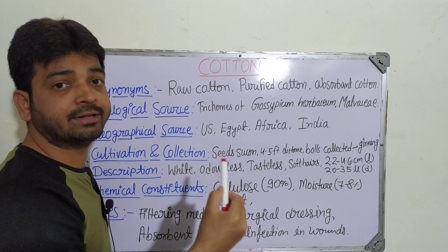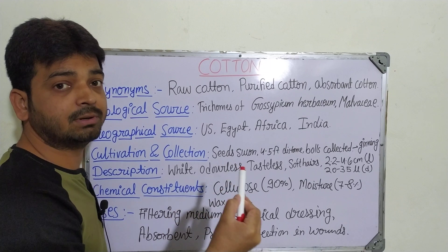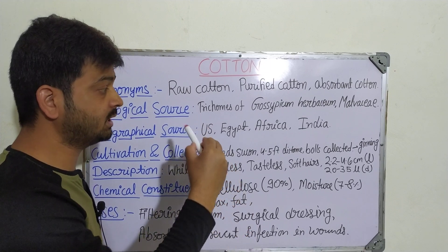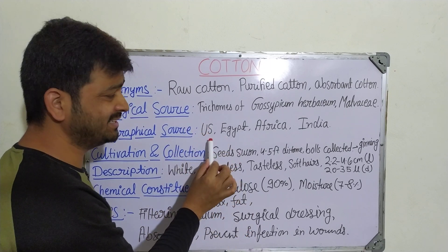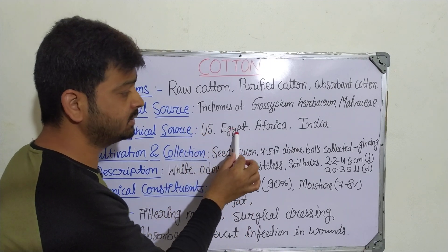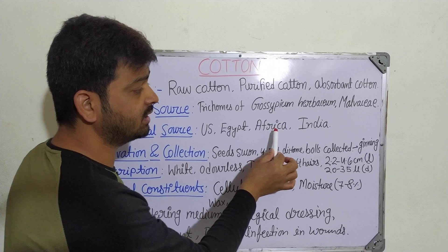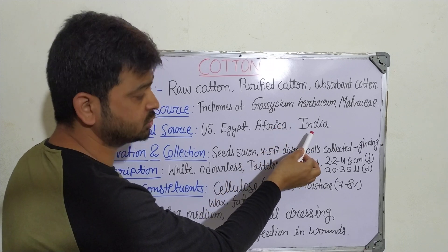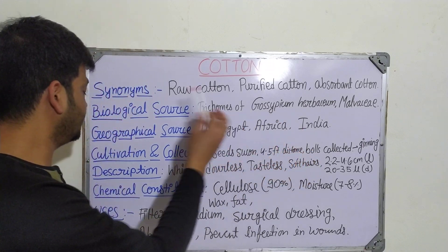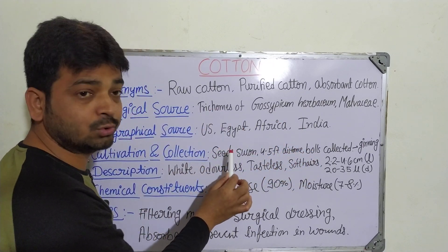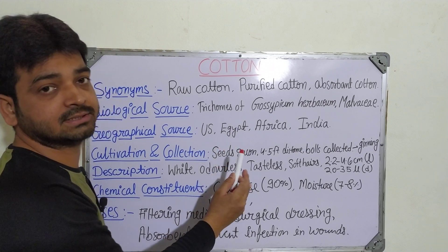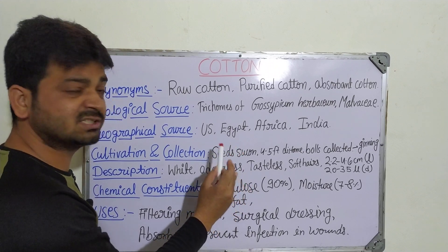Coming to the geographical source — the locations where it is cultivated and which agroclimatic conditions are suitable for this plant — it is grown in the United States, Egypt, Africa, and India.